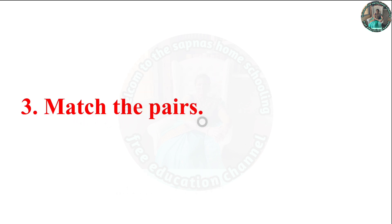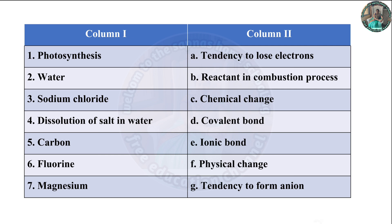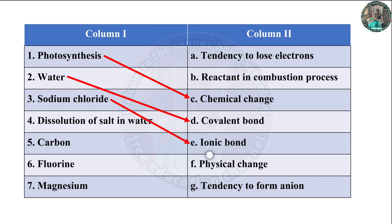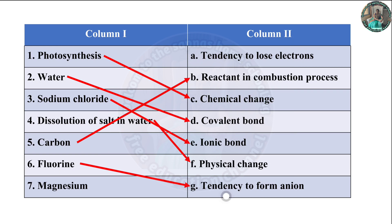Question 3: Match the pairs. Photosynthesis — chemical change. Water — covalent bond. Sodium chloride — ionic bond. Dissolution of salt in water — physical change. Carbon — reactant in combustion process. Fluorine — tendency to form ion. Magnesium — tendency to lose electron.